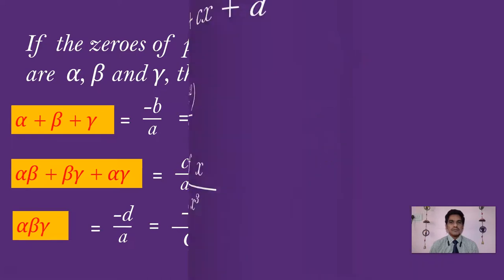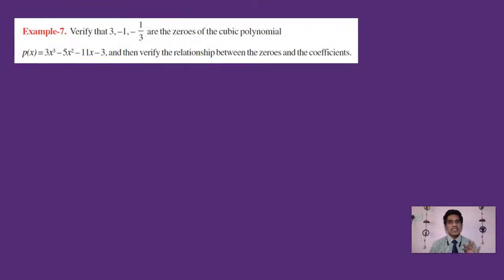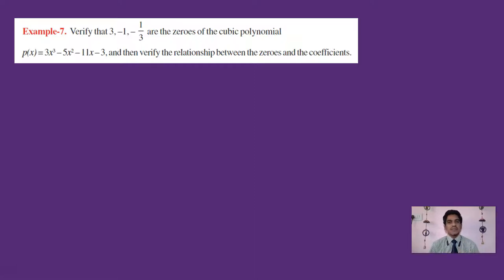Have a look at this problem. Show that 3, -1, and -1/3 are the zeros of the cubic polynomial 3x³ - 5x² - 11x - 3, and then verify the relationship between the zeros and the coefficients. This problem has two parts: first, verify that the given numbers are zeros of the polynomial by substituting them into x to get 0; second, verify the relations between coefficients and zeros.